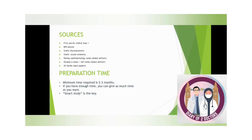Now we are going to talk about the sources you can use for your preparation. First Aid for USMLE Step 1 is the main book you are going to use as a reference for your theory. Other main reference books include BRS Physio, Snell's Neuroanatomy, and Snell's Ocular Anatomy.